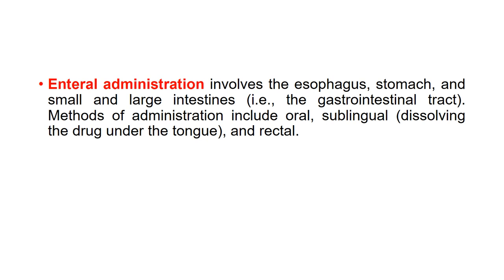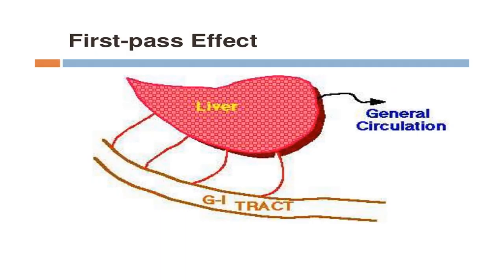First pass effect is a term you should know before we enter the topic properly. Any drug taken orally goes into the stomach; from there, only a small portion is absorbed into the circulation and enters the liver, where metabolism takes place. Only a small part then gets absorbed into the circulation. This metabolism in the liver is known as first pass effect or first pass metabolism.